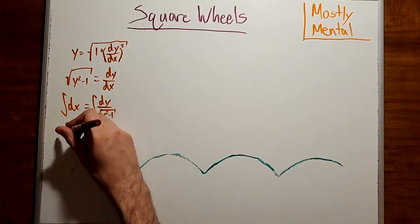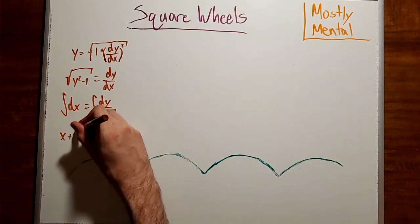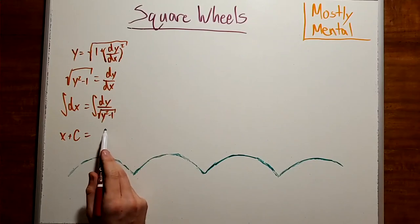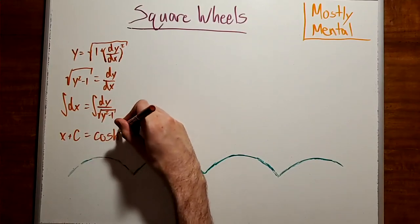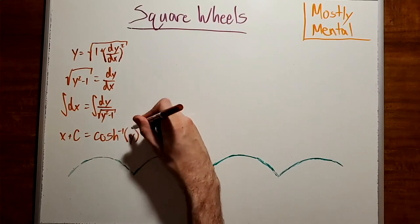On the left, that gives us x plus a constant. And on the right, if you remember your list of obscure integrals from calculus class, that gives us the inverse hyperbolic cosine of y.